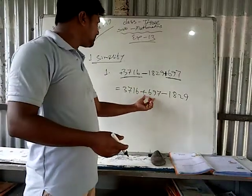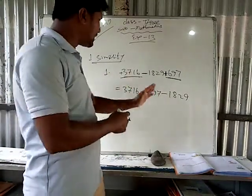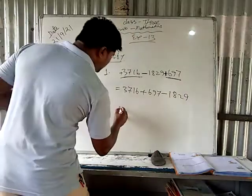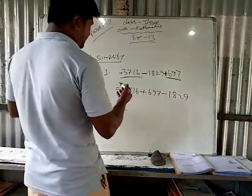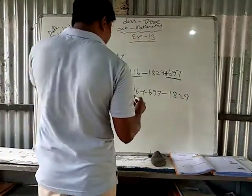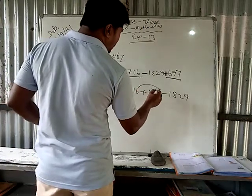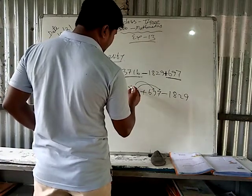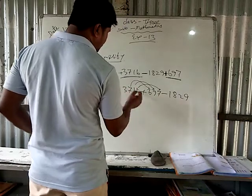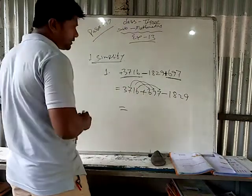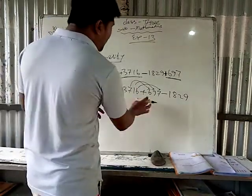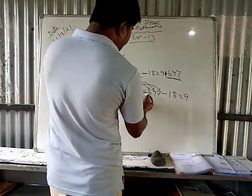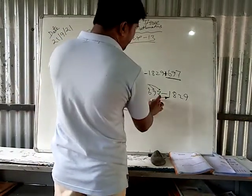We separate the positive numbers on one side and the negative one on the separate side. Then we will add the positive numbers. Units to units, tens to tens, hundreds to hundreds — we add them like that. So: six and seven.